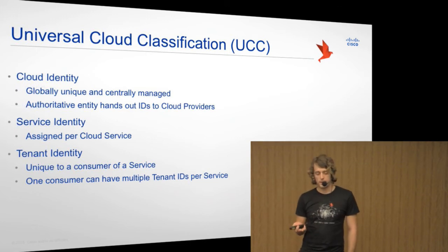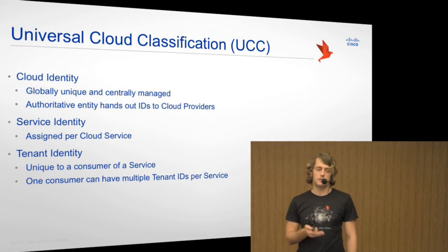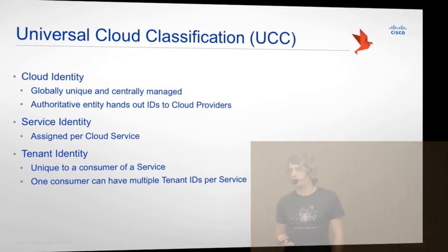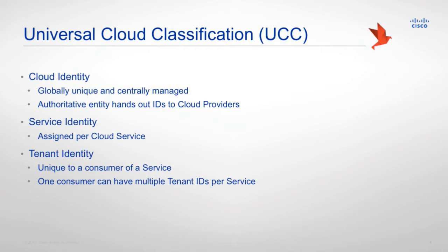We have three IDs. The cloud ID identifies the cloud provider — it has to be globally unique and there needs to be some kind of mechanism to manage these IDs globally. Our proposal is something similar to DNS, where a cloud provider can register and the service provides an ID to that provider so that it's globally unique and centrally managed. The service ID and the tenant ID are managed by the provider itself, so they only have local significance. But with the three IDs together as a pair, they make up a unique ID that can be used end to end for identification.